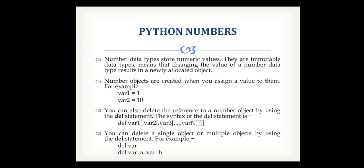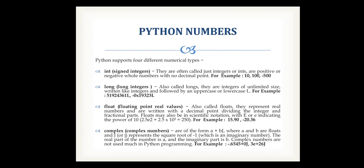Number objects are created when you assign a value to them. For example, var1 equals 1, var2 equals 10. When you assign the value 1, it assigns a signed integer. You can also delete the reference to a number object by using the delete statement. The syntax is: del var1, var2, var3. You can delete a single or multiple objects using the delete statement.